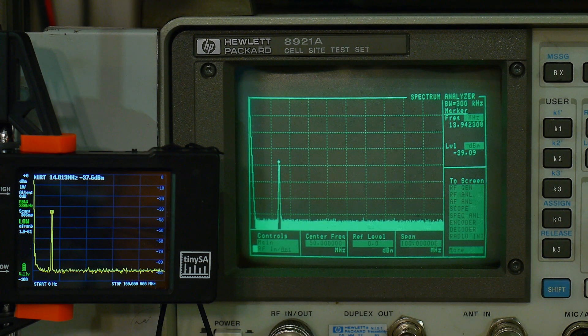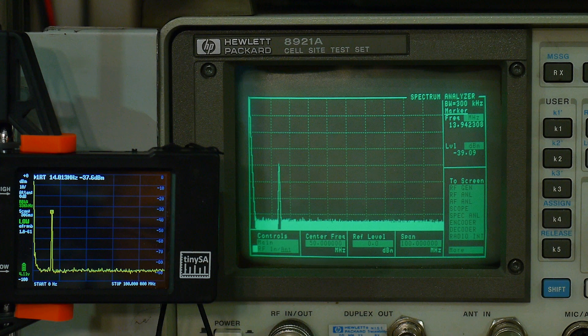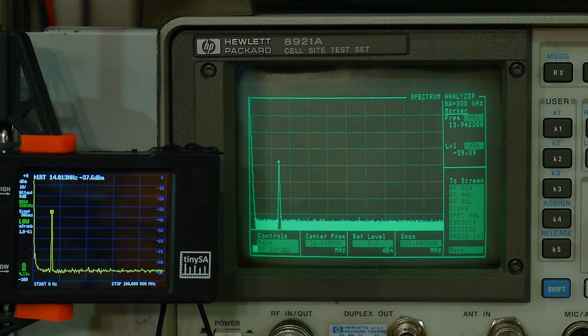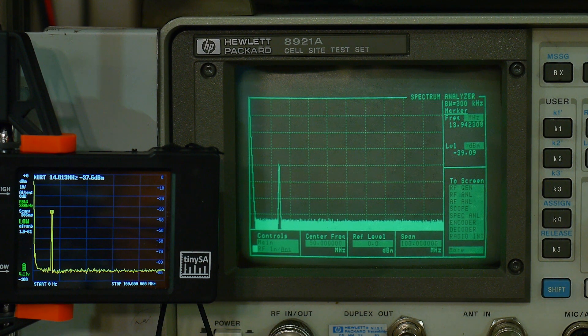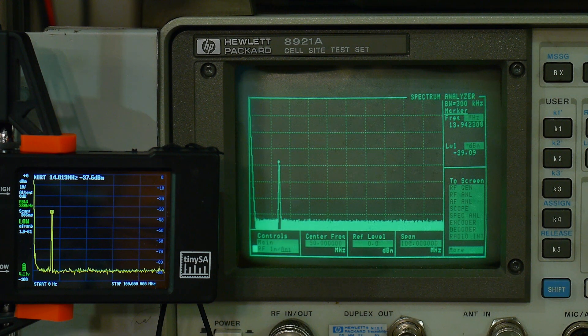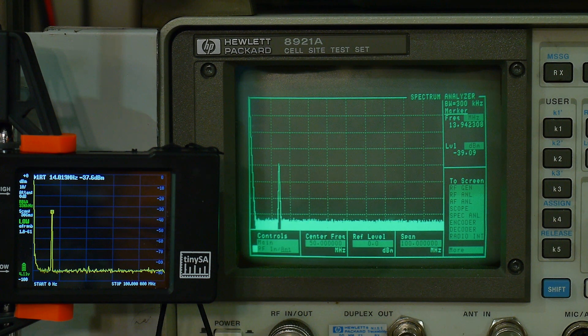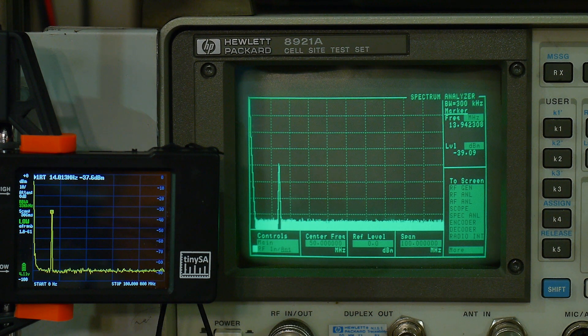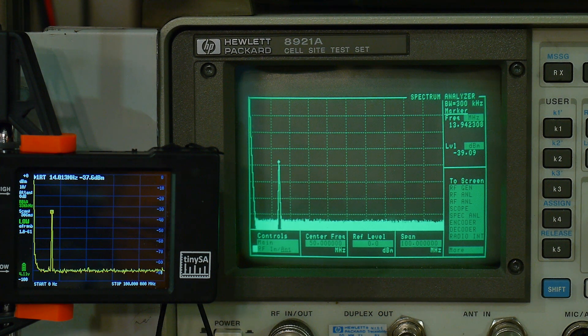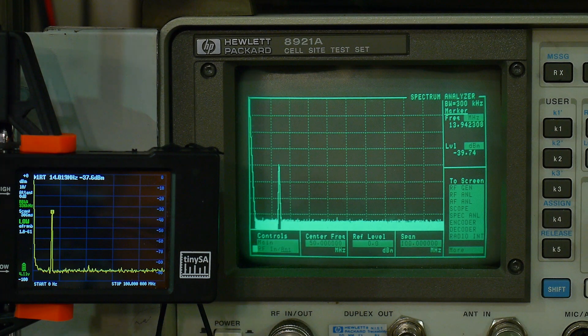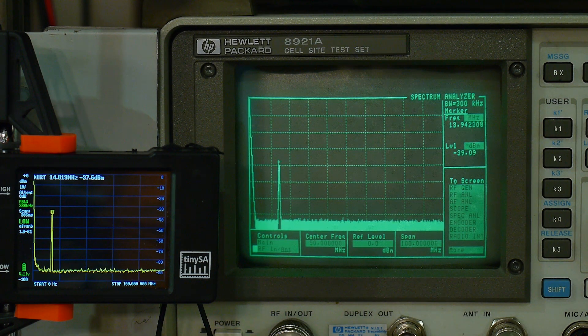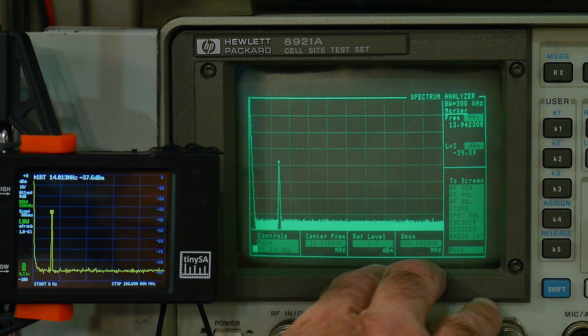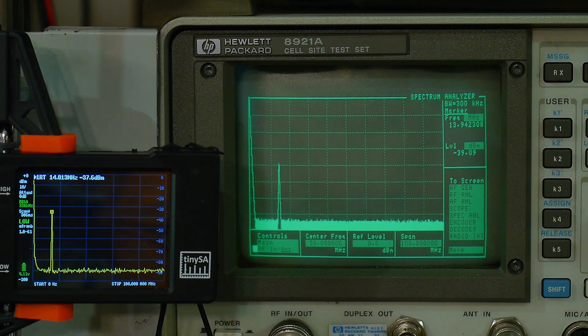I was looking at the TinySA and was commenting on some harmonics that were being generated, and those are something that all spectrum analyzers do if they're overdriven, if the mixer is overdriven. So to be fair for the TinySA I'll show you how even an expensive spectrum analyzer can show those things.